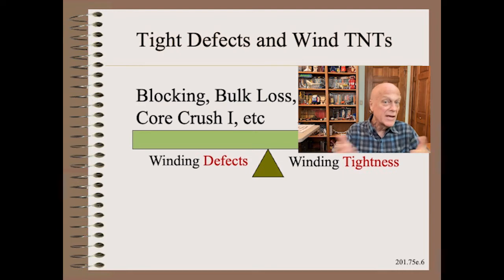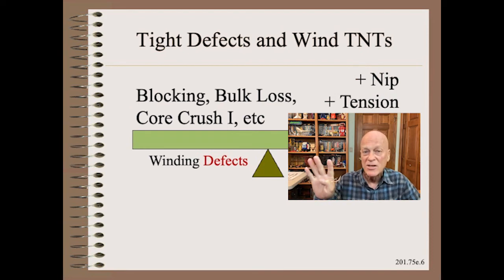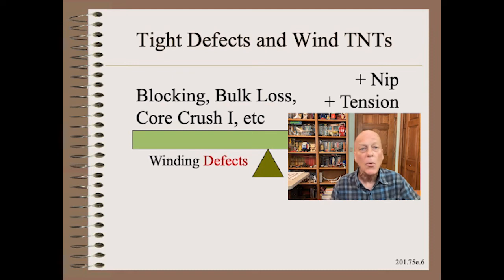Those who have taken my award-winning and trademark web 101 course will know all about tight winding defects such as blocking which we just talked about here, bulk loss, type one core crush, and a dozen more. Here we can use any of four possible winder knobs, singly or in combination, to reduce any of the tight defects.